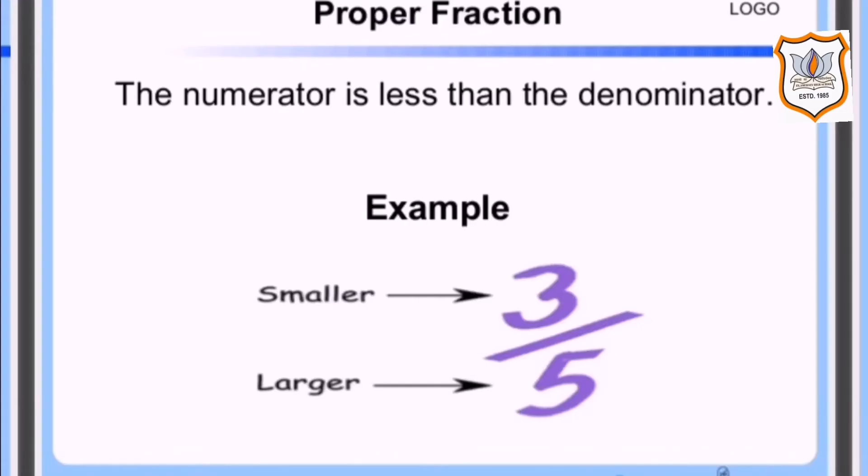Now next is proper fraction. Fractions where the numerator is less than the denominator are called proper fractions. For example, three by five, where the numerator is three and the denominator is five. Three is the smaller number and five is the larger number, so it is a proper fraction where the numerator is less than the denominator.